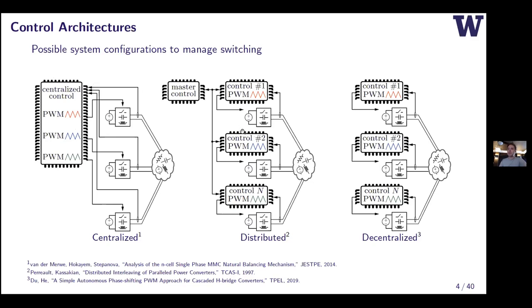The next step up is a distributed setup where control functions are split apart, but you still need a communication bus keeping track of all unit timings to maintain switch interleave spacing. This introduces another vulnerability and limits expandability. The holy grail is something decentralized — you just plug it in, it works, and the converters perform cohesively as a system. This is really what we're working toward.